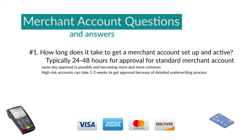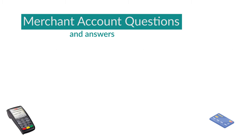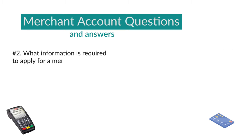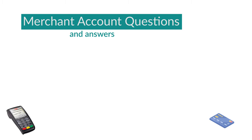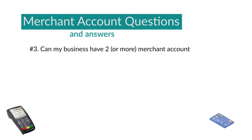What sorts of information is typically asked for during the application process? There's a checklist linked in the description, but typically it includes standard company info, tax ID number, your bank account for deposits, and personal information like your social security number and other ownership-specific details.